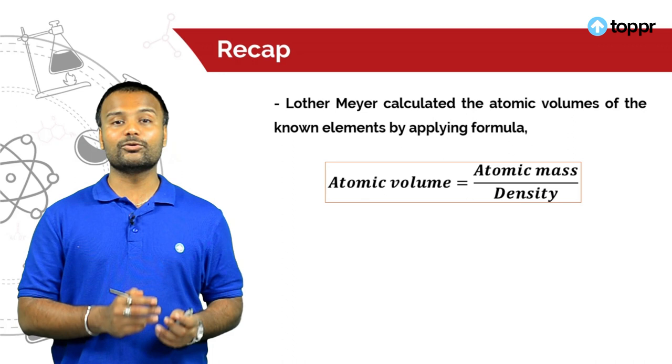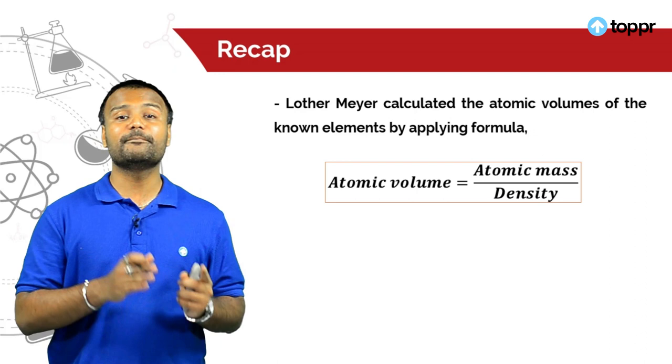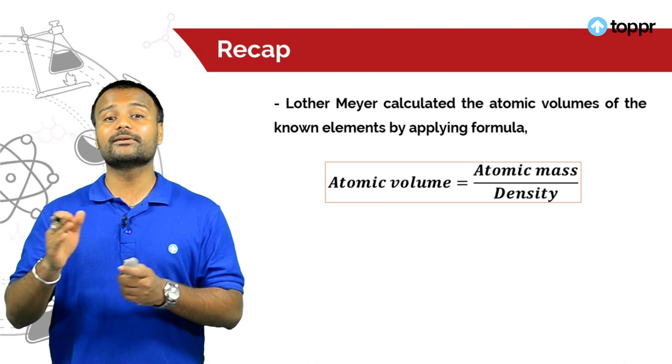To summarize, we understood how Lother-Meyer plotted this curve and why it is called the atomic volume curve. On the x-axis, he plotted atomic masses, and on the y-axis, atomic volume.